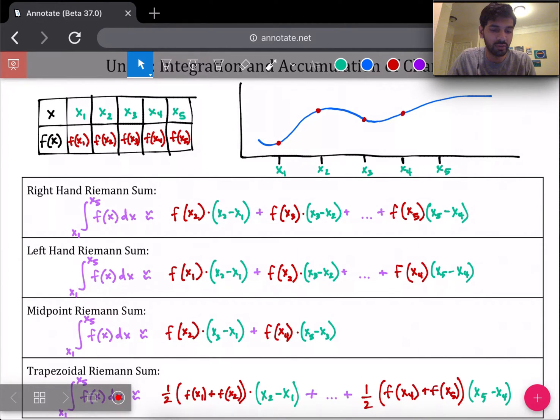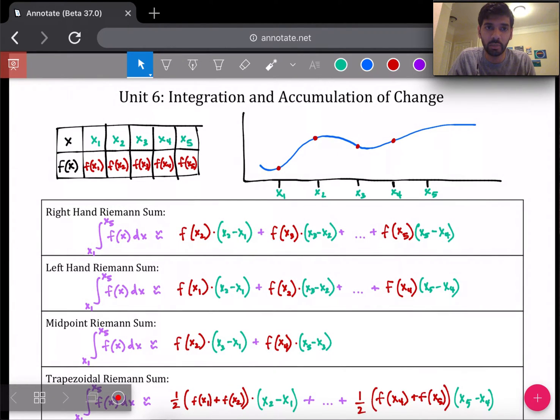This is going to be the study guide for unit six. This unit is all about integration and accumulation of change, which means accumulation of change is about the area underneath the graph. As you go underneath the graph and are adding up that area, you're accumulating the change that is happening there. So that's what that vocab means.